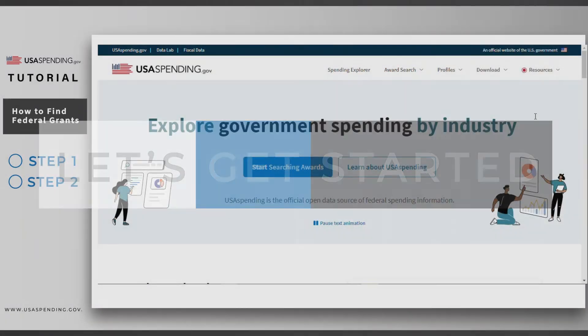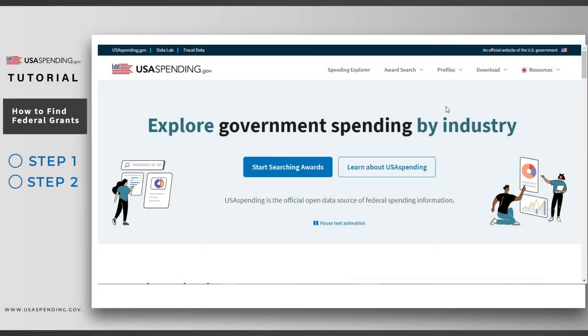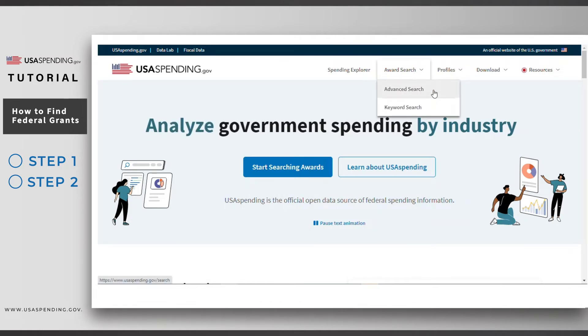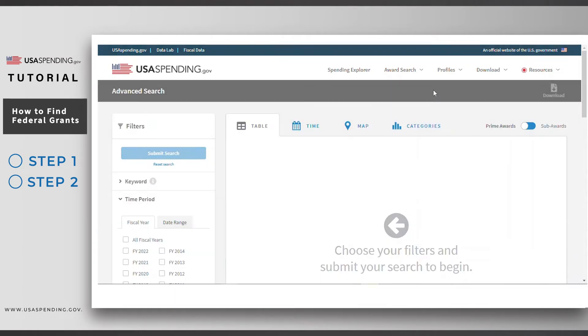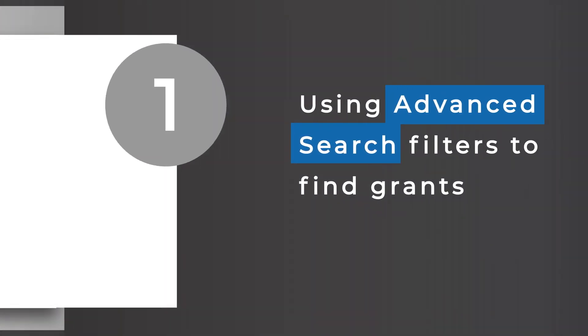From the main menu, we'll go to Award Search and select Advanced Search. Step one: use advanced search filters to find grants.